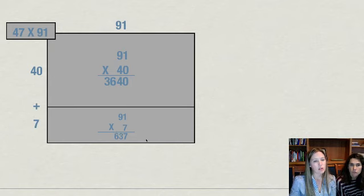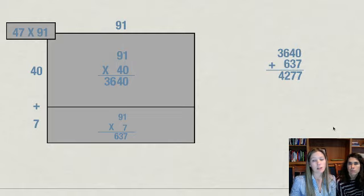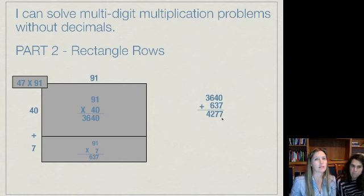And now that I found the area of my two rectangles, I will add them together. And we should end up with 4,277. So hopefully you got that as well.